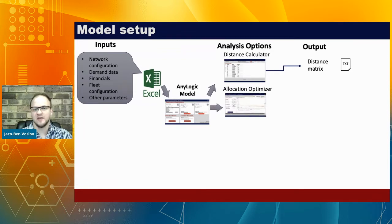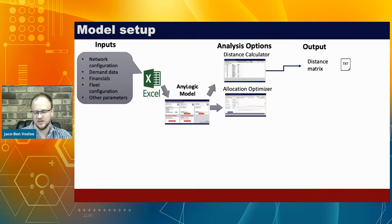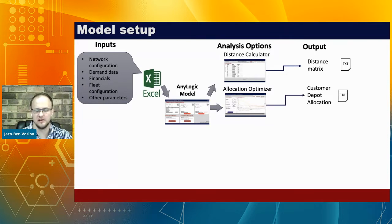The next component was the allocation optimizer. Given a new supply chain configuration with new depot locations and existing customers, we needed to determine which customers should be served from which depot, considering that some depots would have reduced capacities. We needed to optimize not only for stem miles — the final mile from depot to customer — but also for depot capacities. We accomplished this through simulated annealing, which produced the customer-to-depot allocations.